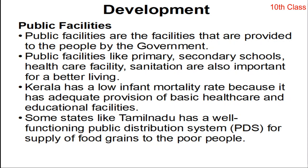These are called ration shops or fair price shops. Tamil Nadu has a well-functioning public distribution system and has provided good supply of food grains to poor people. Tamil Nadu stands first in this regard, providing food grains and other essential commodities to the poor and vulnerable sections of people. Through this public distribution system, the poor are provided food grains and other essential items.